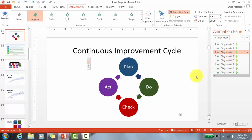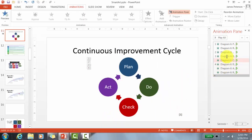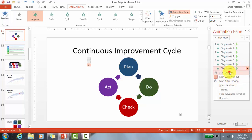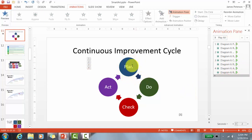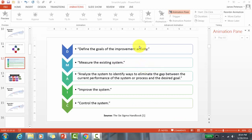I want the blue circle and blue arrow to come up at the same time, and the green circle and green arrow together. I'll set some animations to 'Start With Previous' and others to 'Start On Click.' This way the circle and arrow appear together on one click. Going through all of them: blue items come up together, green together, red together, and purple together — Plan, Do, Check, Act.